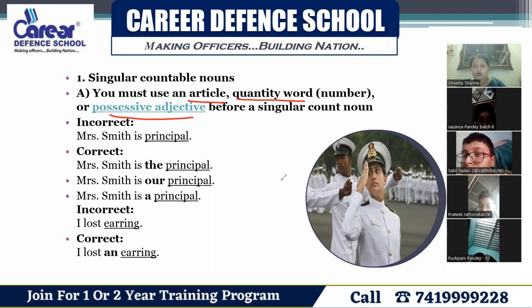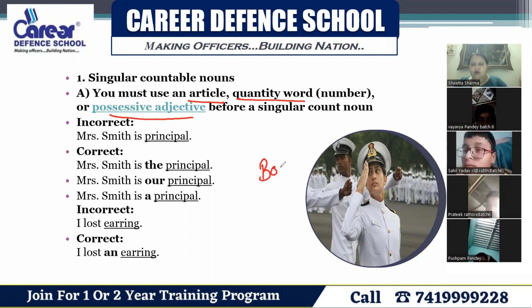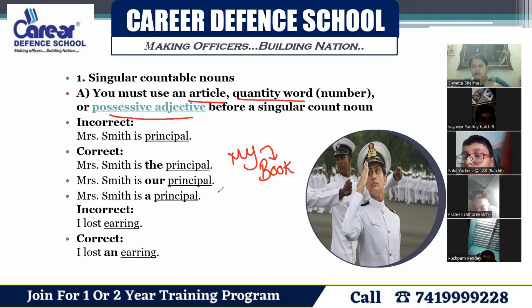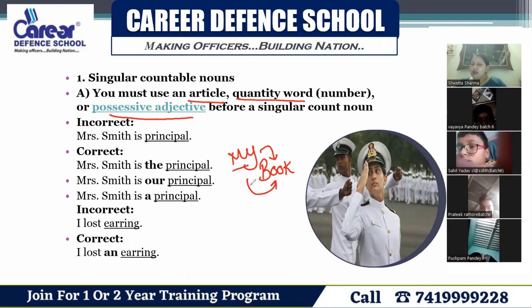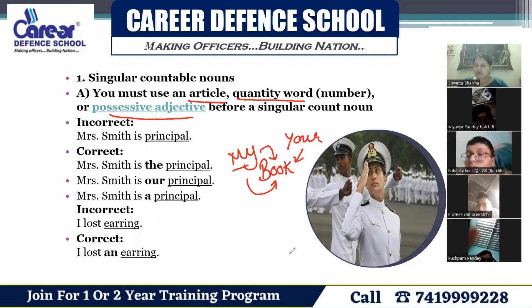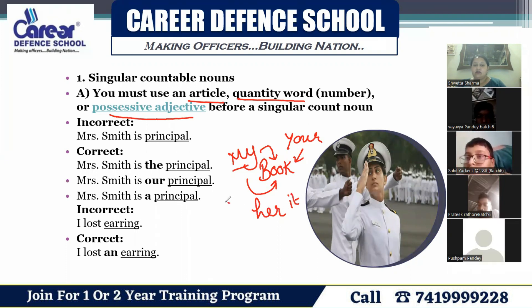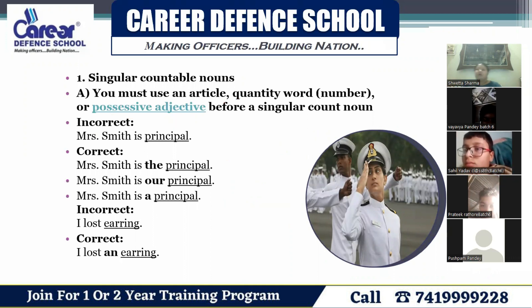Possessive adjectives are words used to modify a noun to show possession — to show ownership or belonging. For example, if the noun is 'book' and I want to show ownership, I say 'This is my book.' Here 'my' modifies the noun 'book' and shows it belongs to me — that is a possessive adjective. Similarly, 'This is your book.' Words like my, your, his, her — these are all possessive adjectives.